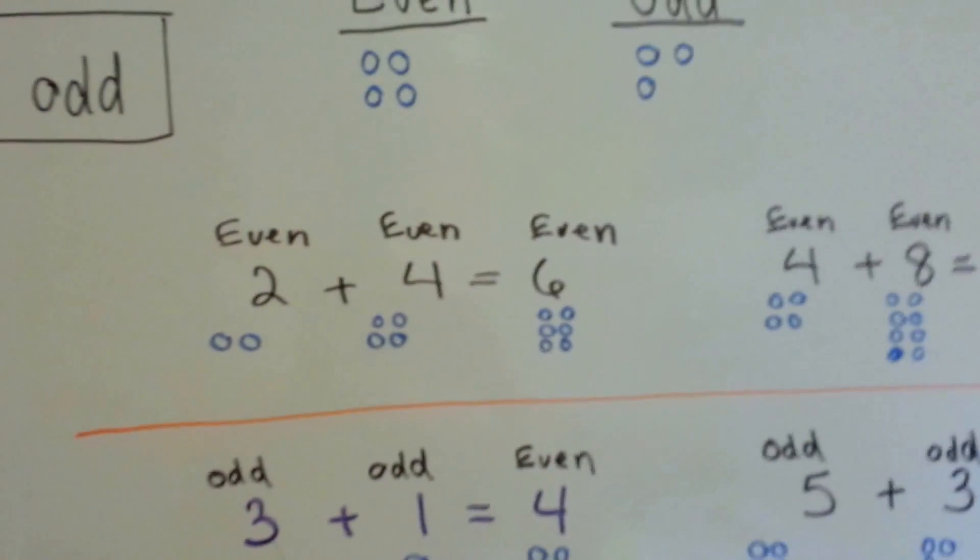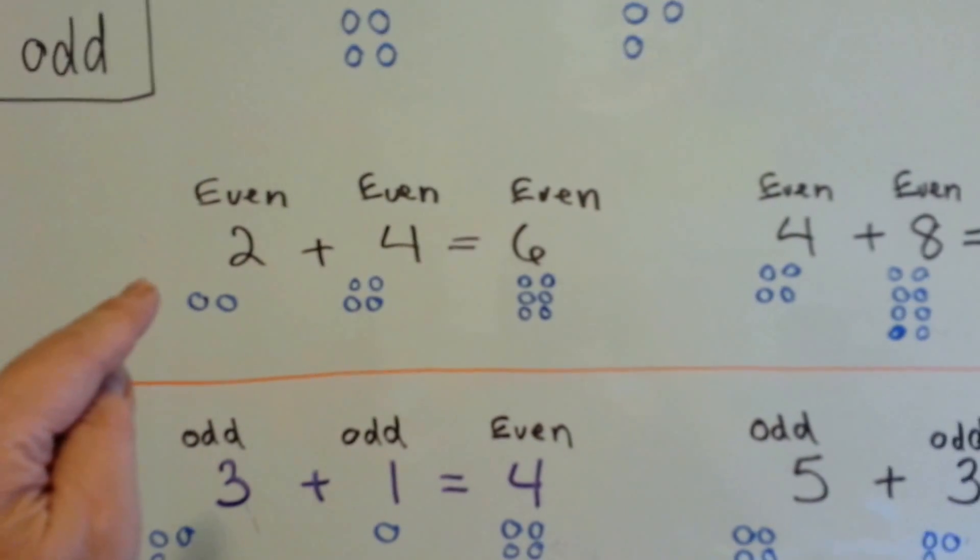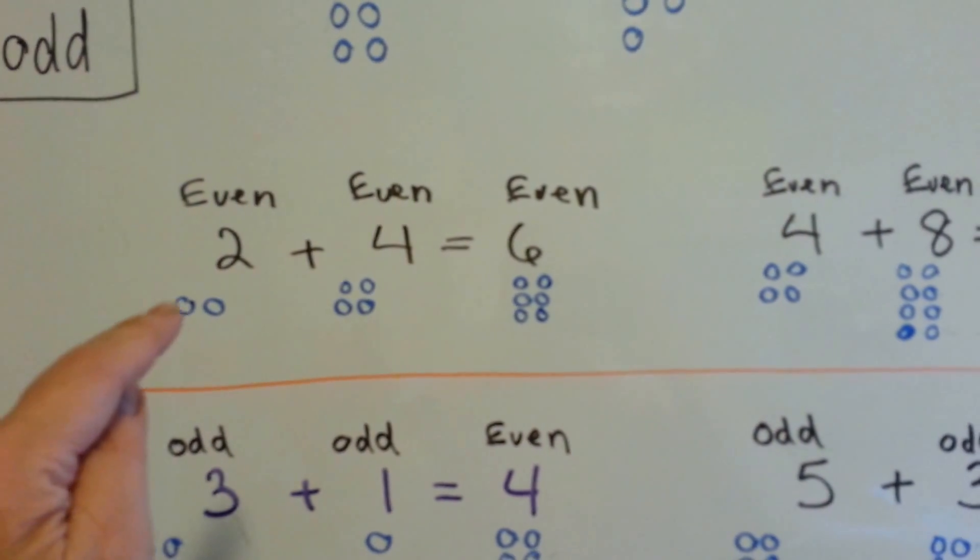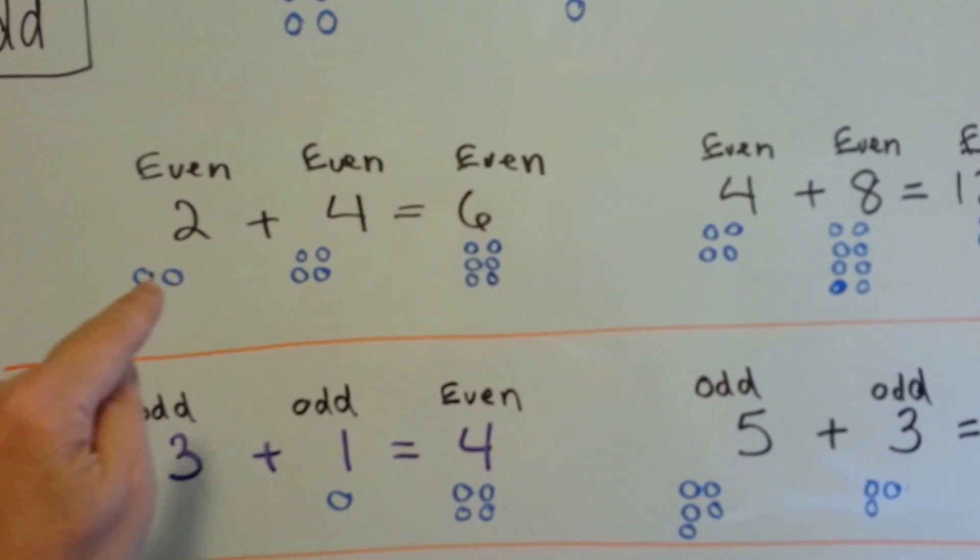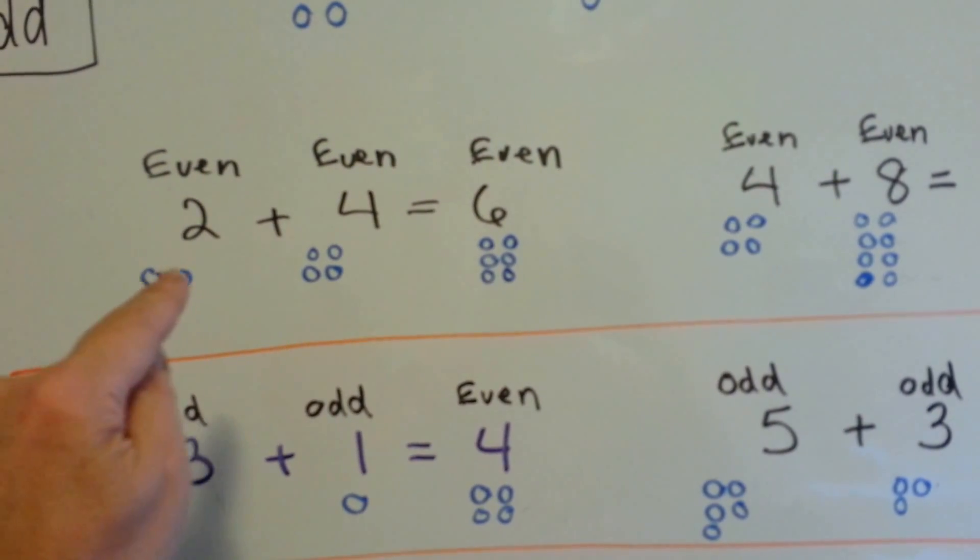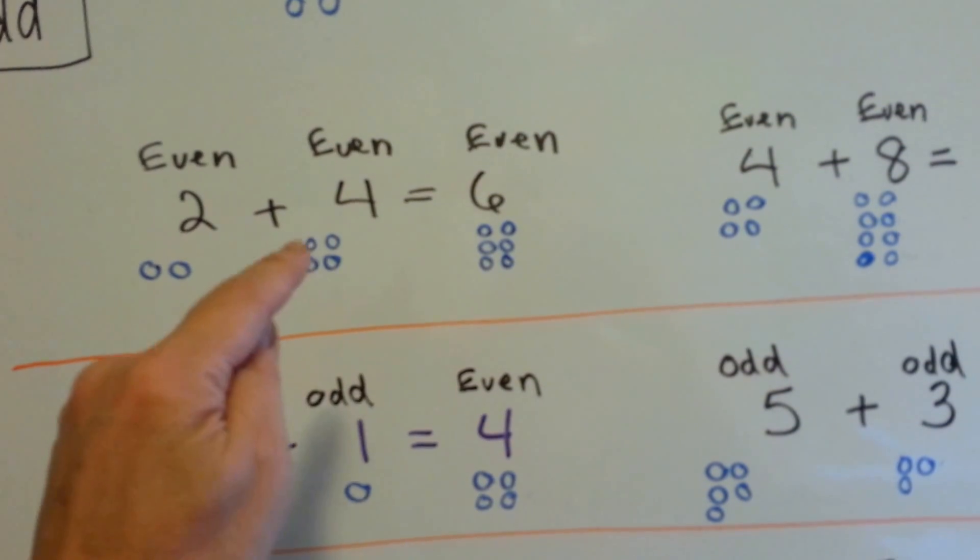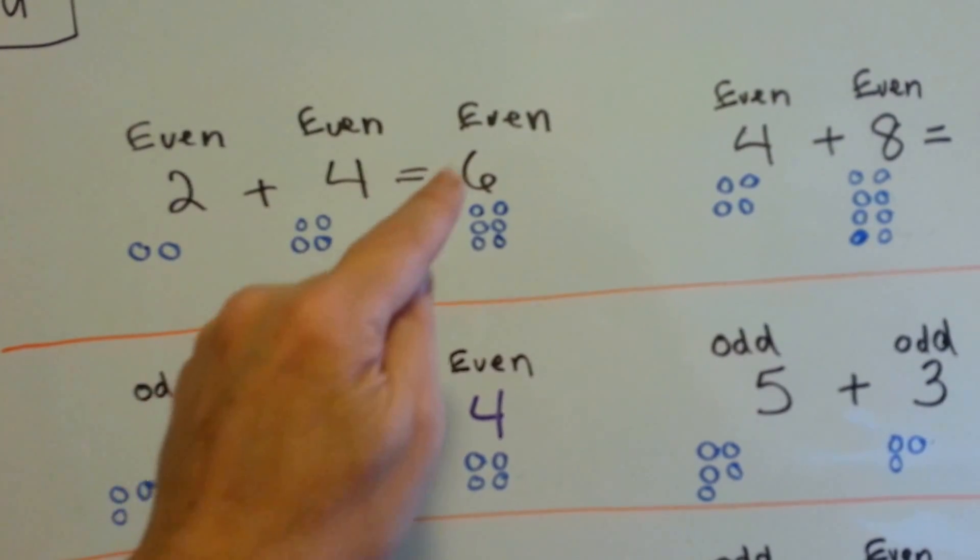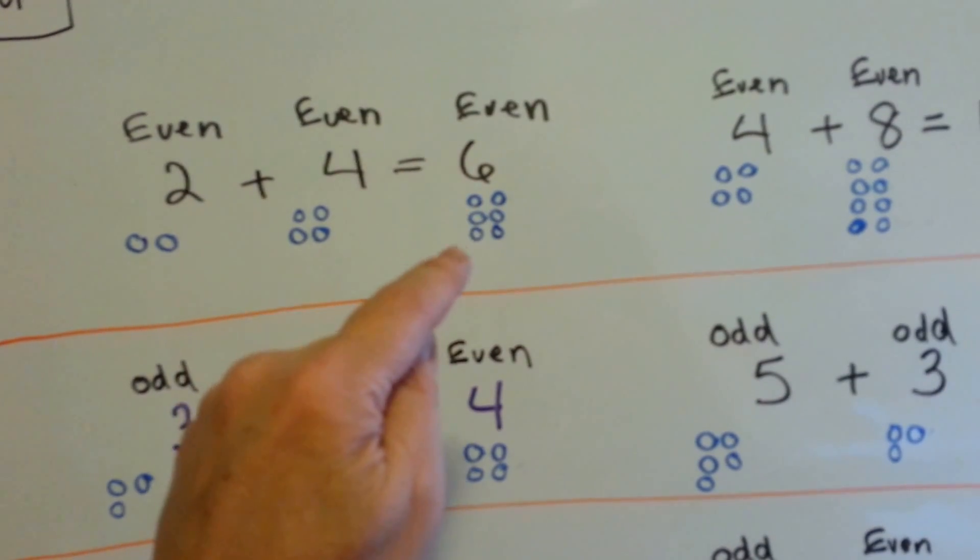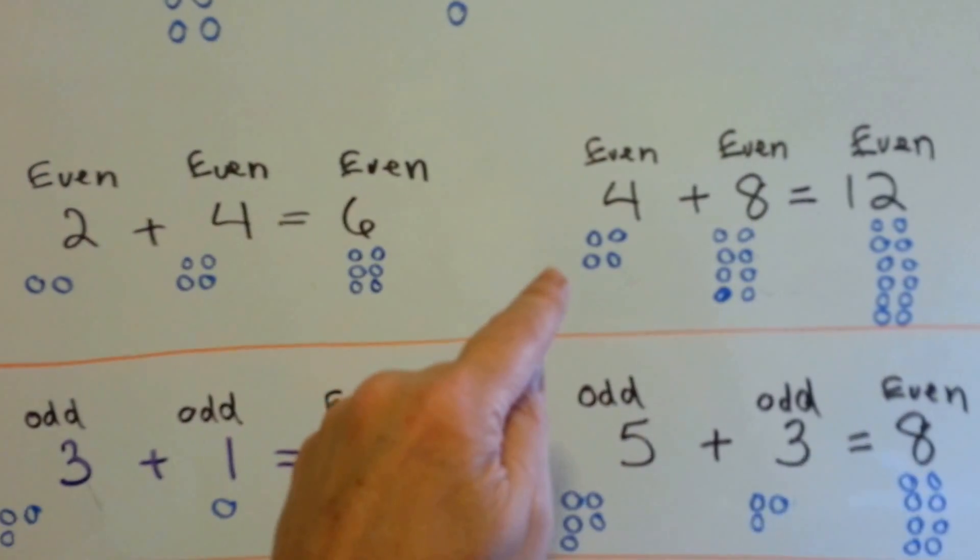So when you're adding you can actually look at what happens. When you add an even number to an even number, you get an even number. 2, that's even because they both have friends, plus 4, that's even because that one has a friend and that one has a friend, equals 6 and these all have friends. See? Let's try it again.